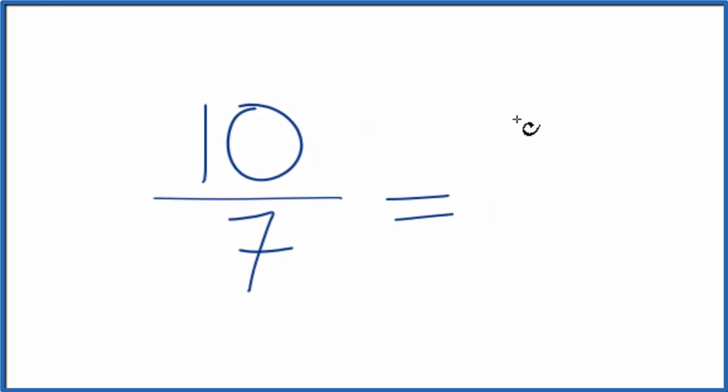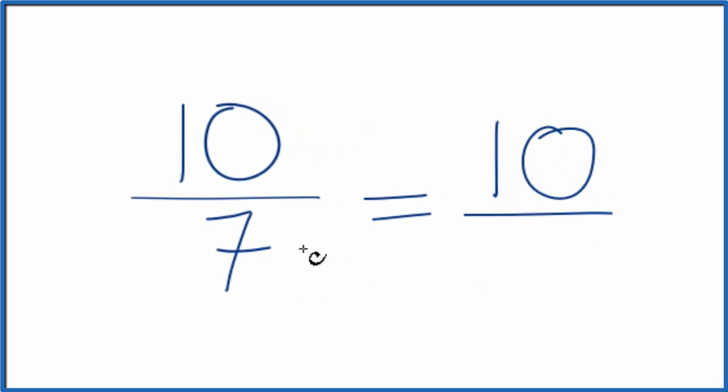We divide 10 by 1, we get 10. And if we divide 7 by 1, we get 7. So that's what we started with. What that means is that the fraction 10 sevenths, we can't reduce or simplify it any further. It's already simplified.